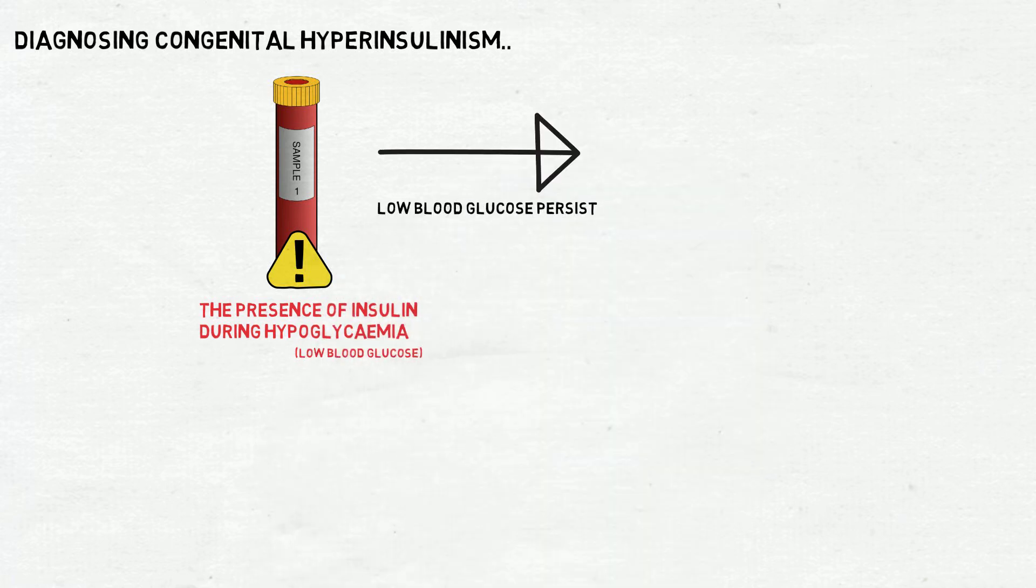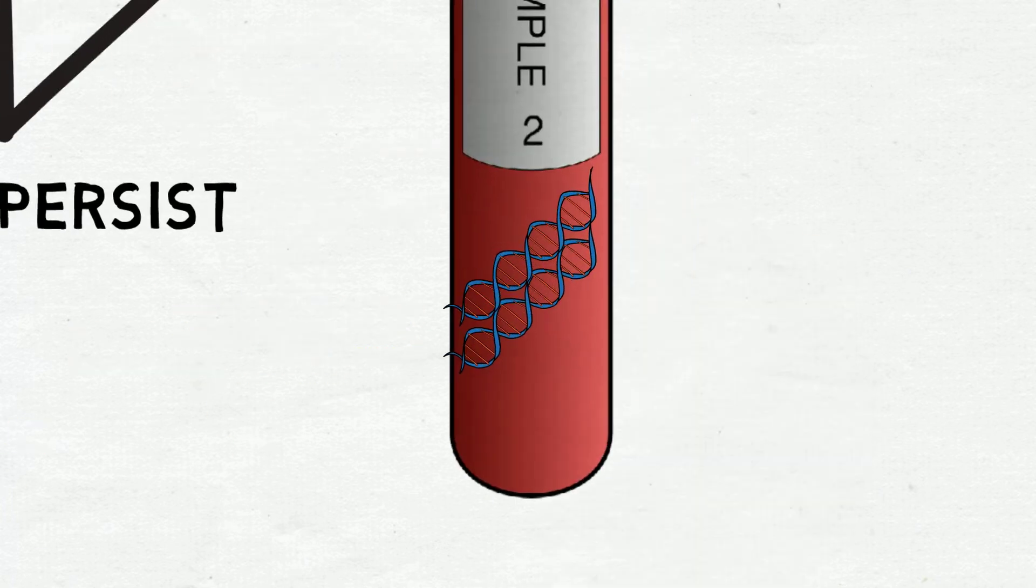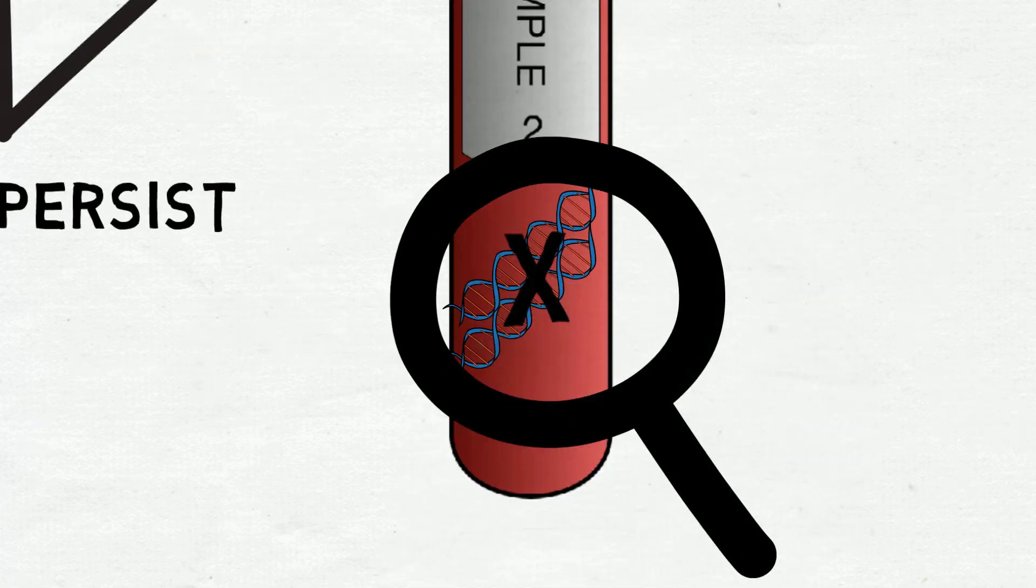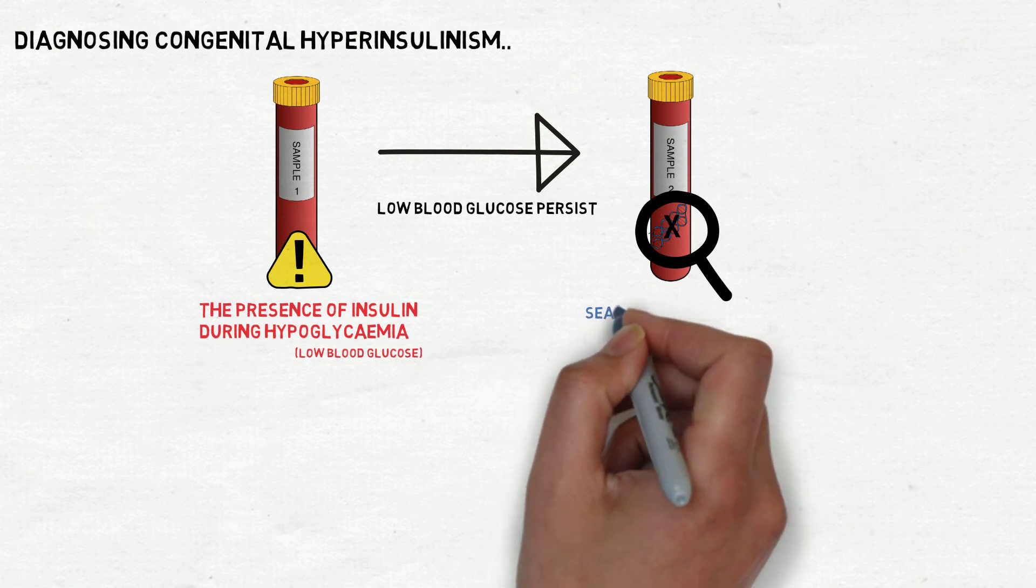If low blood glucose levels persist, another blood sample may be taken to look for mutations or faults in genes associated with CHI.